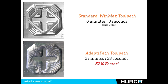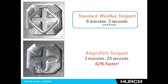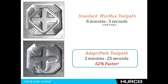From a time standpoint, the standard toolpath took six minutes and three seconds using peck depths. With Adaptive Path — the exact same tool and exact same speeds and feeds, even though feed rates and RPM could have been increased — it ran in two minutes and 23 seconds, which is 62% faster. We were able to cut it in one full depth pass.